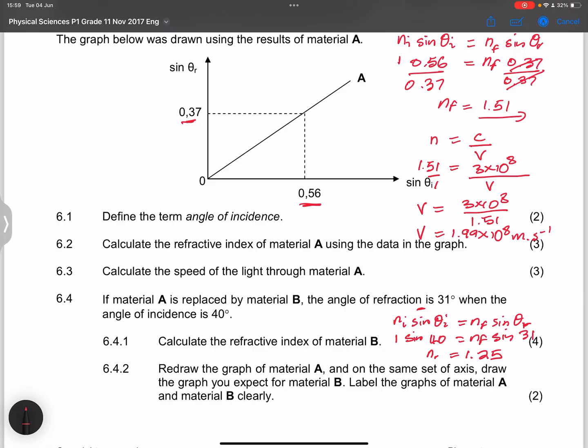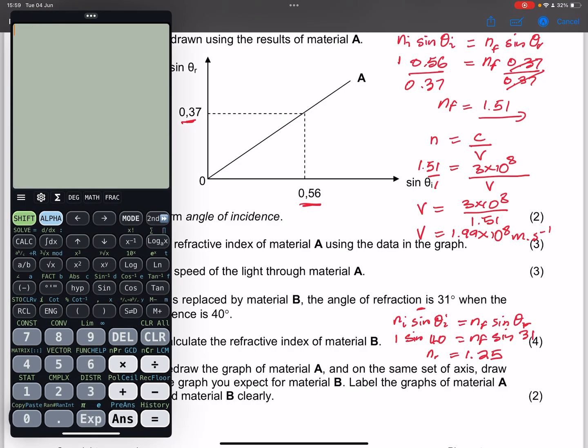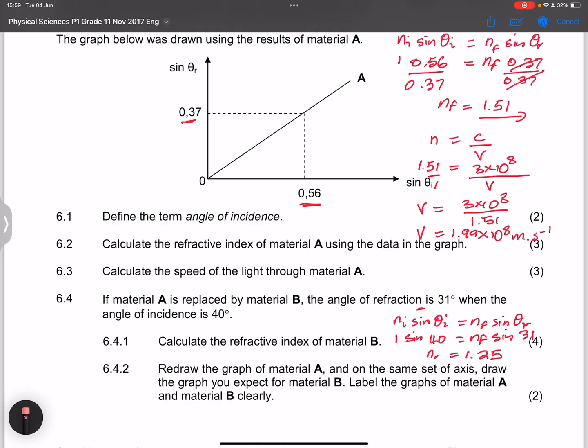what you note there is that the refractive index for material B is actually lower. But remember that this graph here gives me the sine of theta R. You can actually even check it out. And say, well, I know that my angle of refraction in this case is sine of 31. Now, let's check what is sine 31. So if I say sine 31, that gives me 0.51.